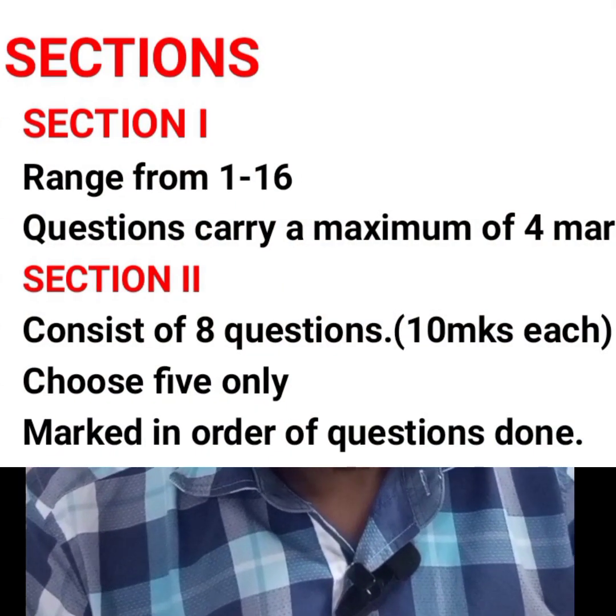The paper consists of section 1 and section 2. Section 1 has questions 1 to 16, and each question carries a maximum of about 4 marks. Section 2 consists of 8 questions worth 10 marks each, and you should choose exactly 5 questions, marked in order of questions done.